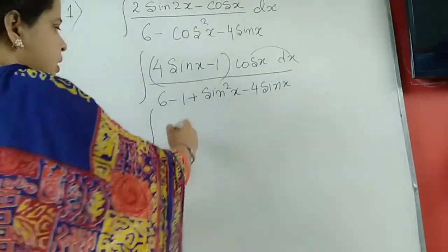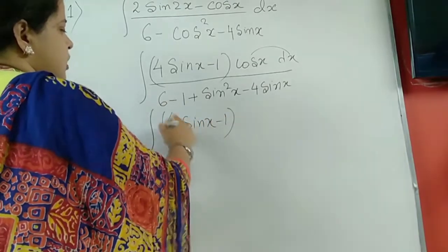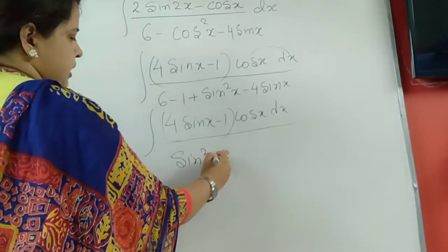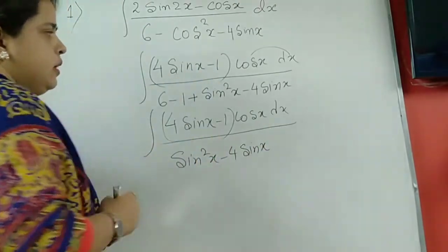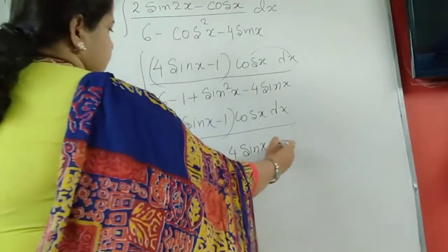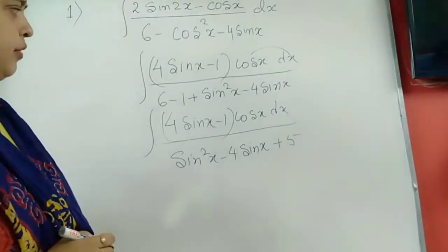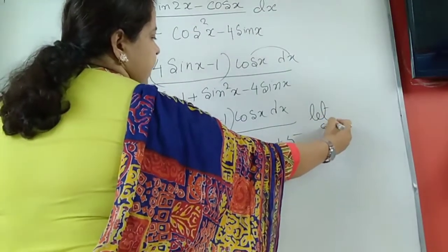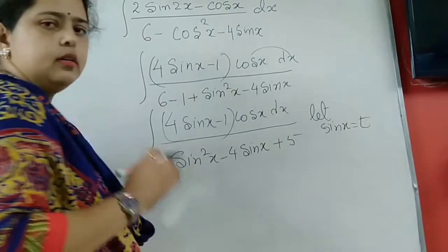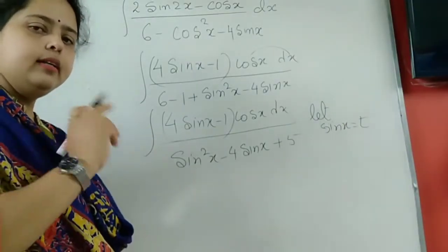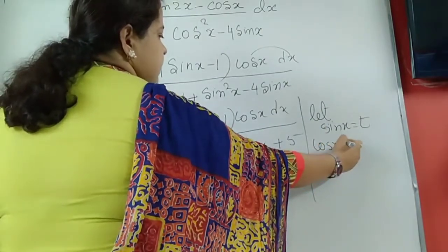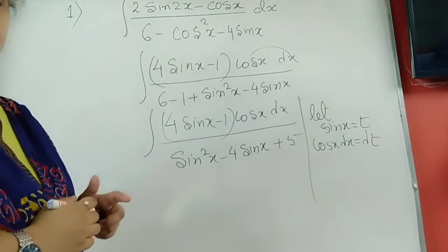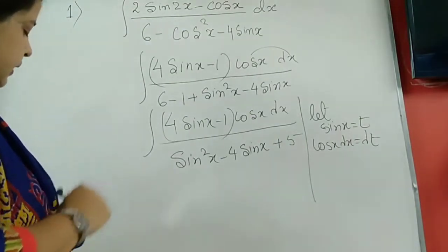First let us make the denominator in a proper way. The denominator becomes a quadratic polynomial in sin(x) — it is sin²(x). This is a quadratic in sin(x). Now the time comes for a substitution: let sin(x) = t, then cos(x)dx will be dt.